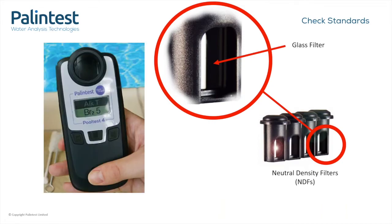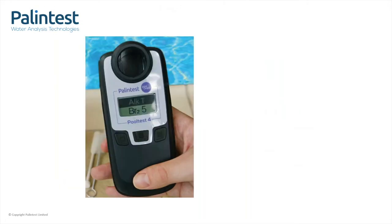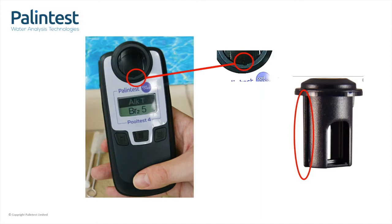NDF standards are what we supply for use with our compact photometers. Because they are flat glass, NDFs have to be positioned at exactly 90 degrees to the light beam. So, this notch in the cell holder ensures that the standards are always located correctly.